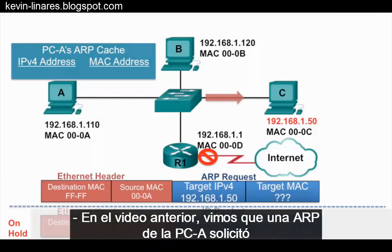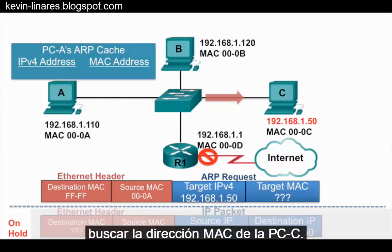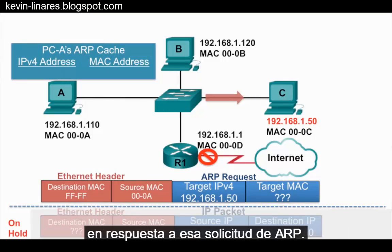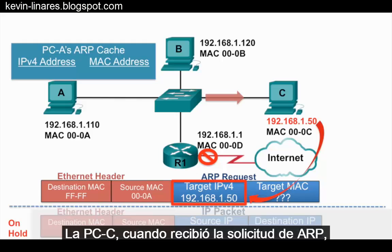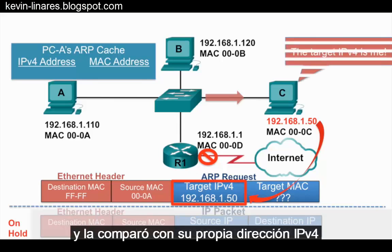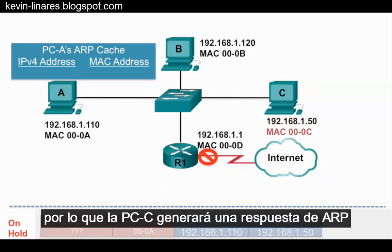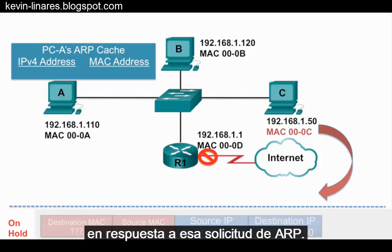In the previous video we saw an ARP request from PCA looking for the MAC address of PCC. In this video we will see the ARP reply in response to that ARP request. PCC, when it received the ARP request, examined the target IPv4 address and compared it against its own IPv4 address, noticing that it was the intended target. So PCC will generate an ARP reply in response to that ARP request.